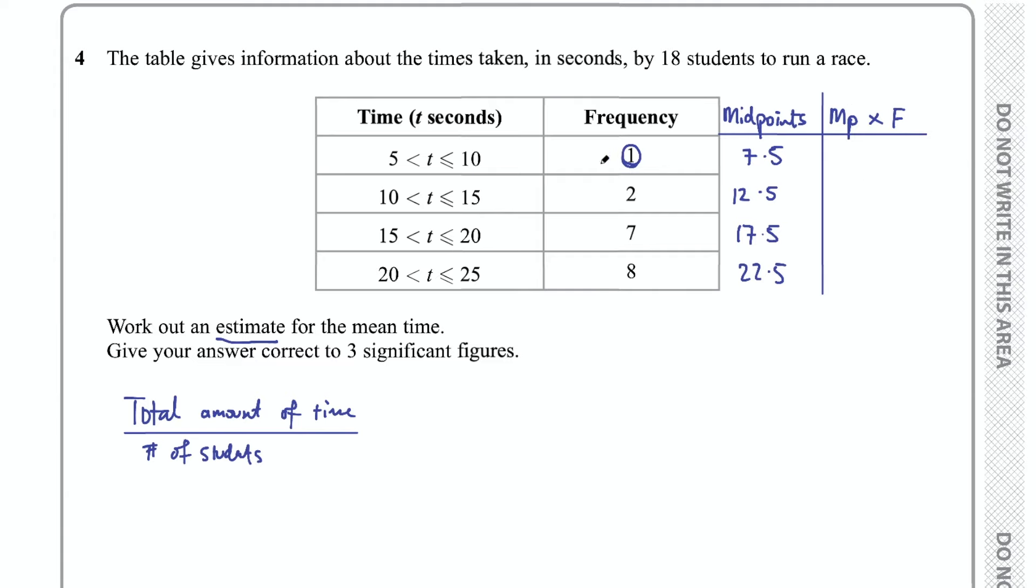We're taking the midpoint 7.5 multiplied by the frequency. So the first one, 7.5 times 1 is just 7.5. The next one, we have two students in this interval. We're going to estimate they took 12.5 seconds each, so we multiply 2 by 12.5 and that gives us a total of 25 seconds altogether for those two students. The next one, we have 7 students in this interval 15 to 20, so we're going to do 7 times 17.5. Calculating that with a calculator, I get 122.5. And then the last one, we have 8 students in this interval 20 to 25. We're going to multiply 8 by that midpoint, estimating that they each took 22.5 seconds, and if you do that calculation you get 180. So these are all the times in each interval for all of the students in each interval.